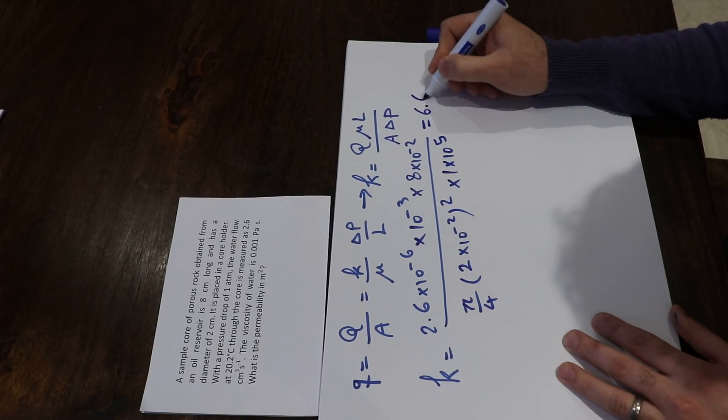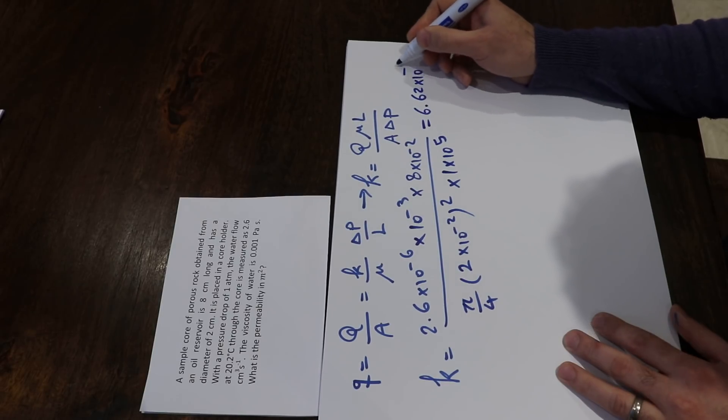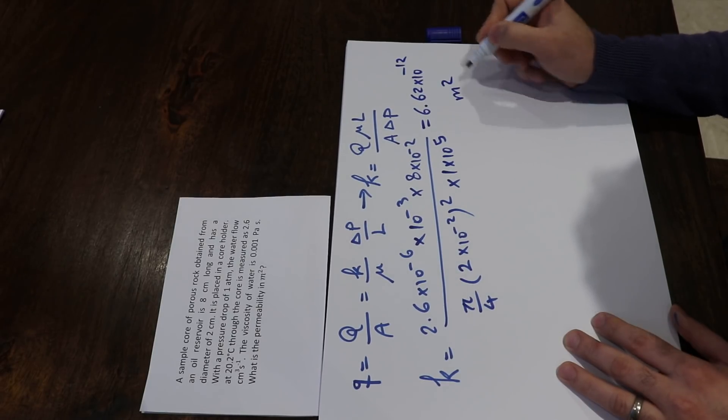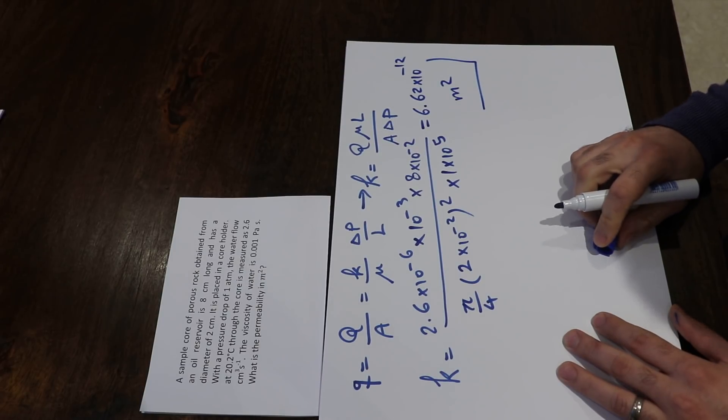This equals 6.62 times 10 to the minus 12 square meters, and that's the solution to this question.